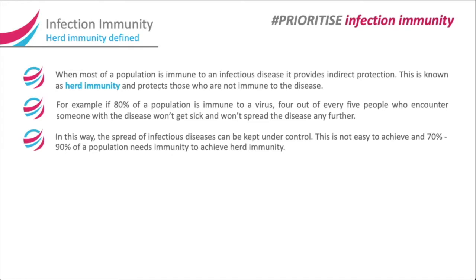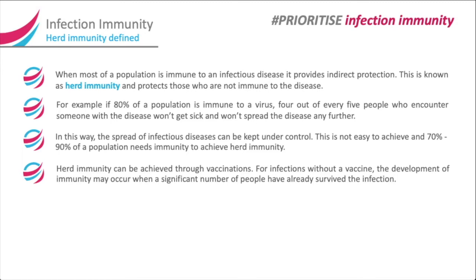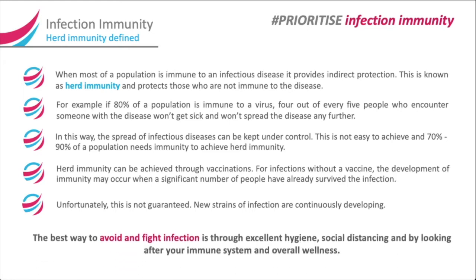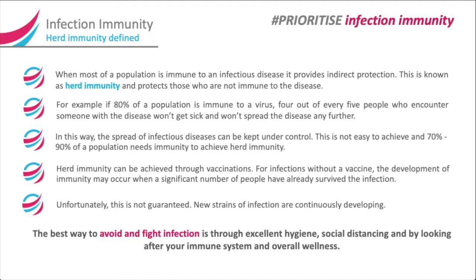In this way, the spread of infectious diseases can be kept under control. This is not easy to achieve, and 70% to 90% of a population needs immunity to achieve herd immunity. Herd immunity can be achieved through vaccinations. For infections without a vaccine, the development of immunity may occur when a significant number of people have already survived the infection. Unfortunately, this is not guaranteed, as new strains of infection are continuously developing.